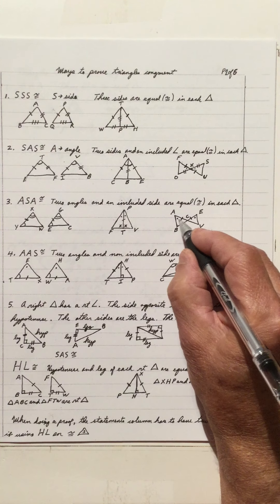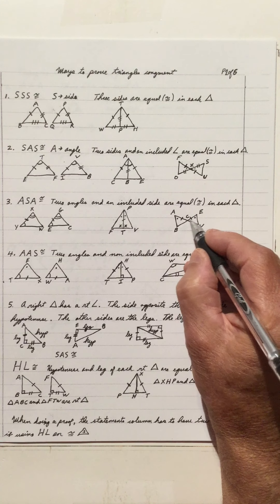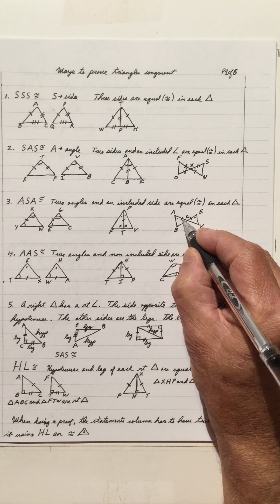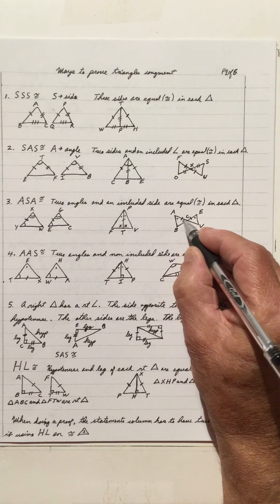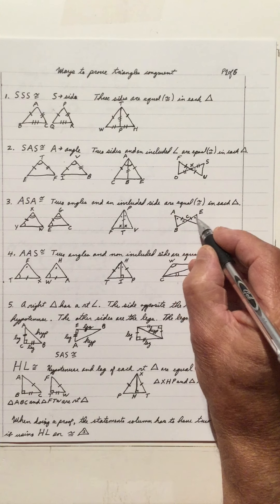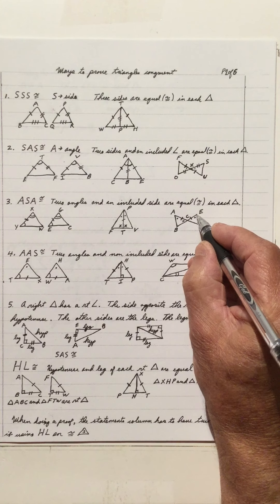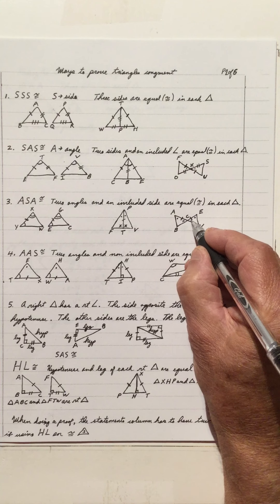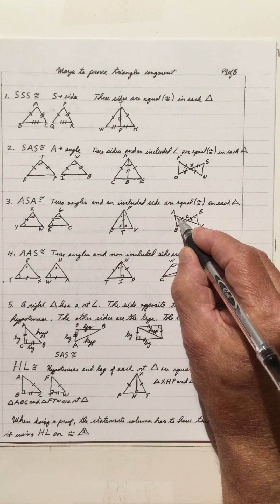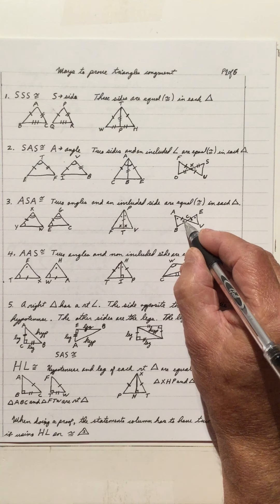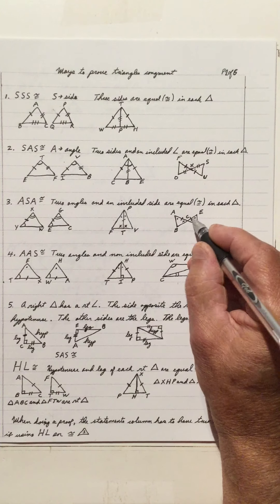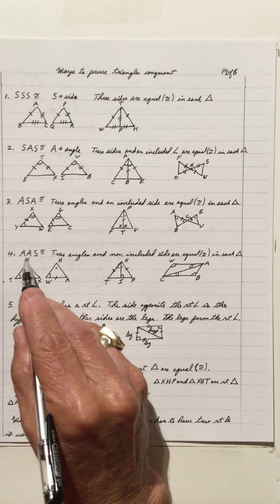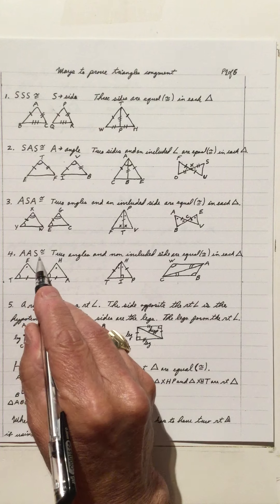Also here we have angle A equals angle E, and angle ACB equals angle ECY. So we have angle, side, angle — the side is between the two angles. We can also have AAS congruency.